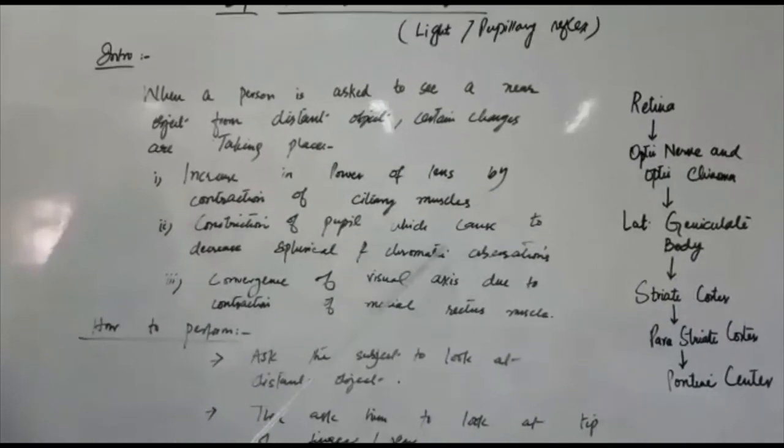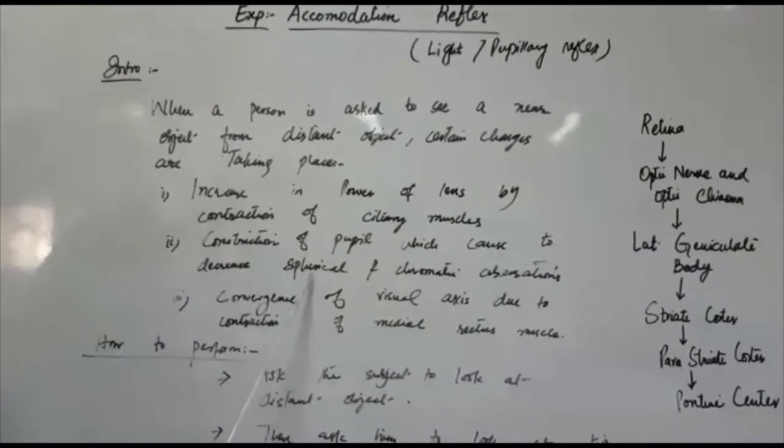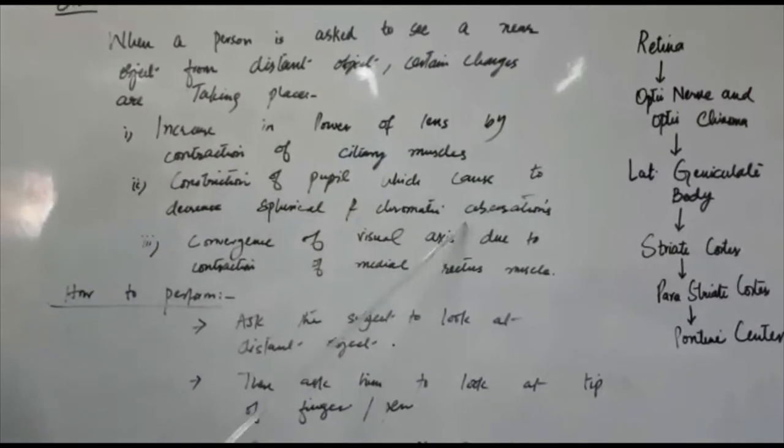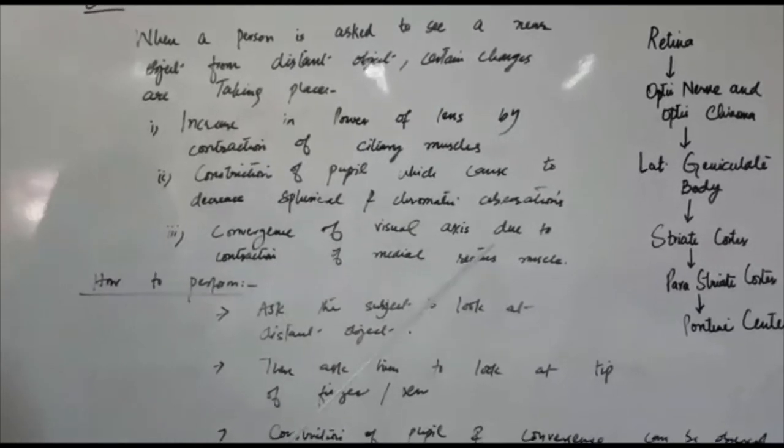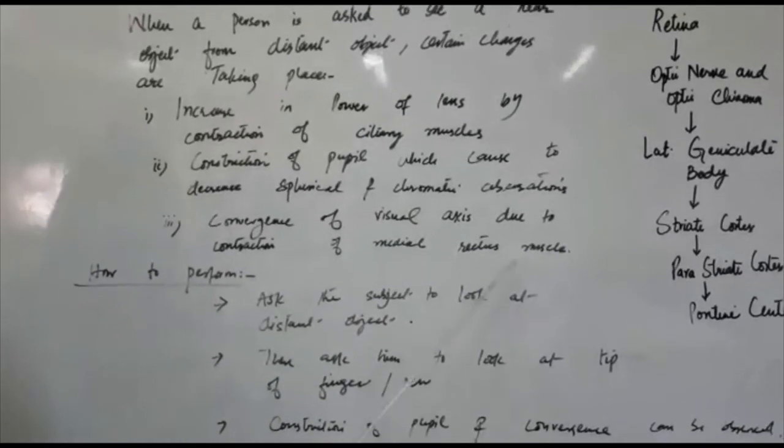Secondly, there is constriction of pupil which causes to decrease spherical and chromatic aberrations by limiting the entry of light. Thirdly, convergence of visual axis due to contraction of the medial rectus muscles.